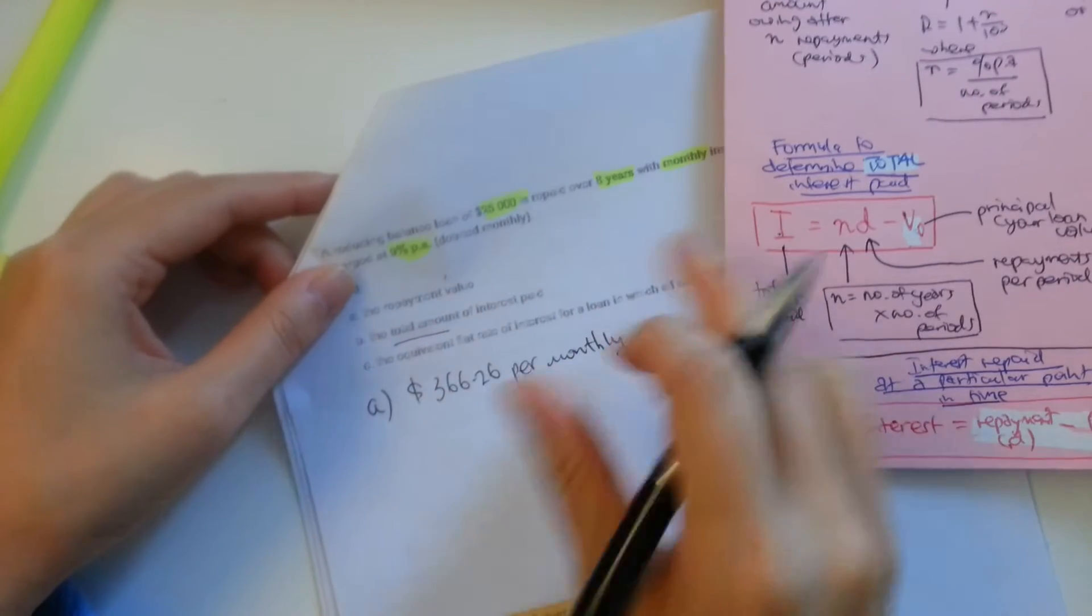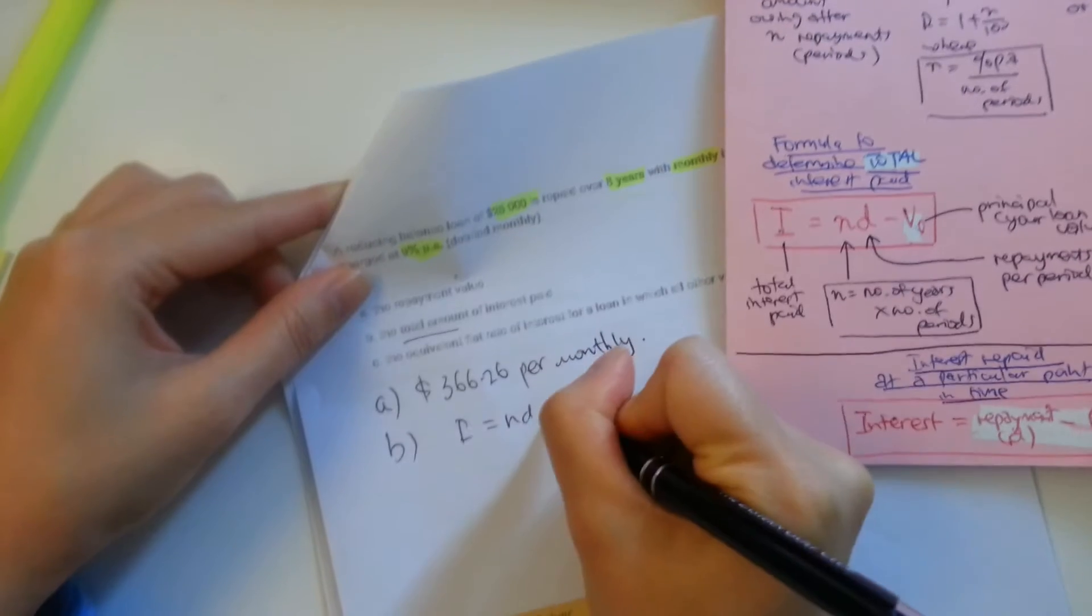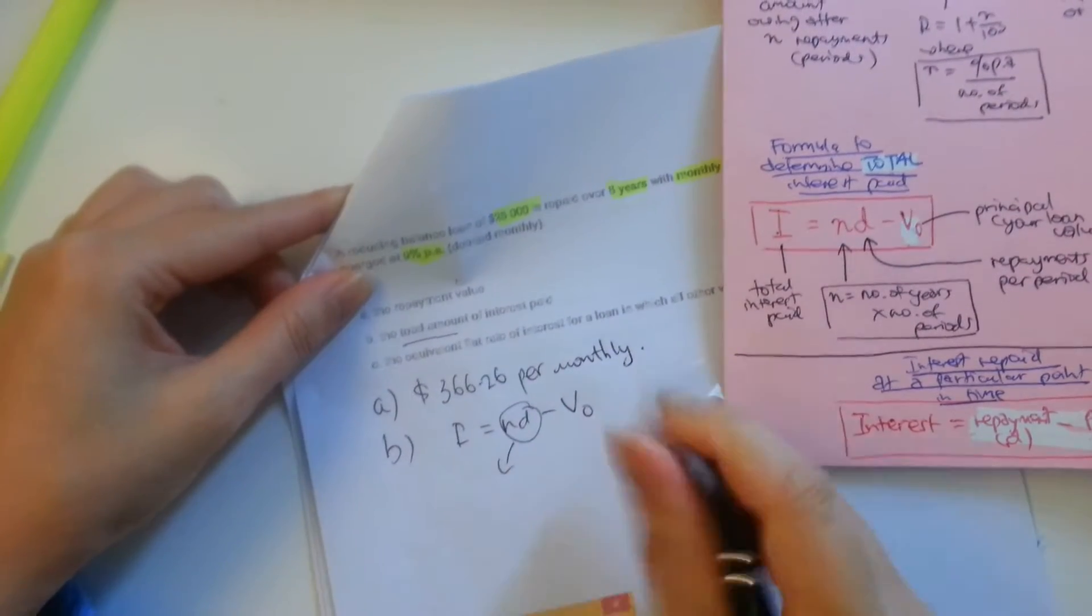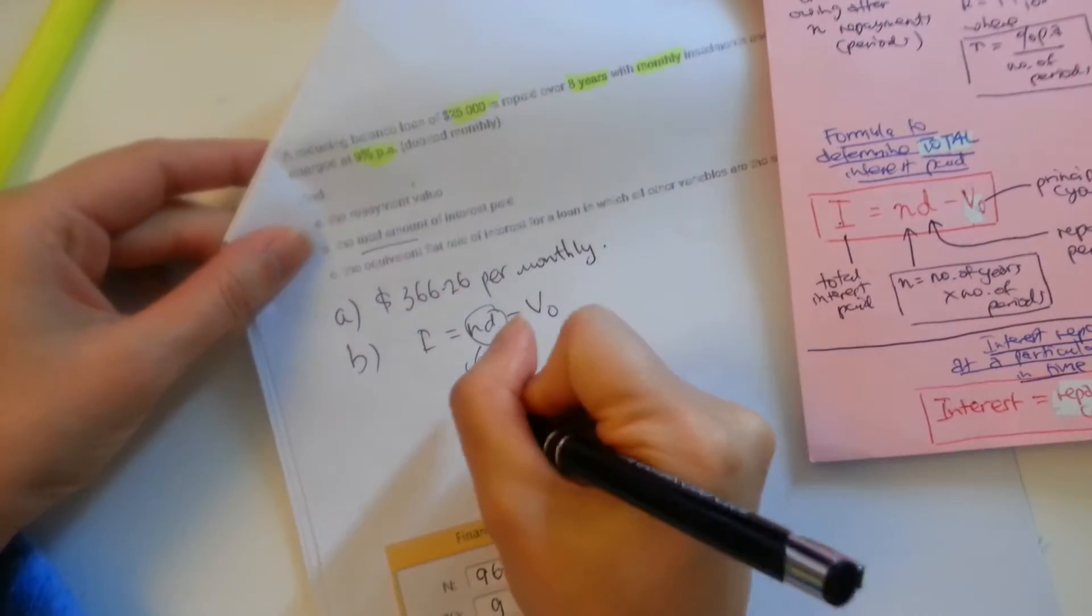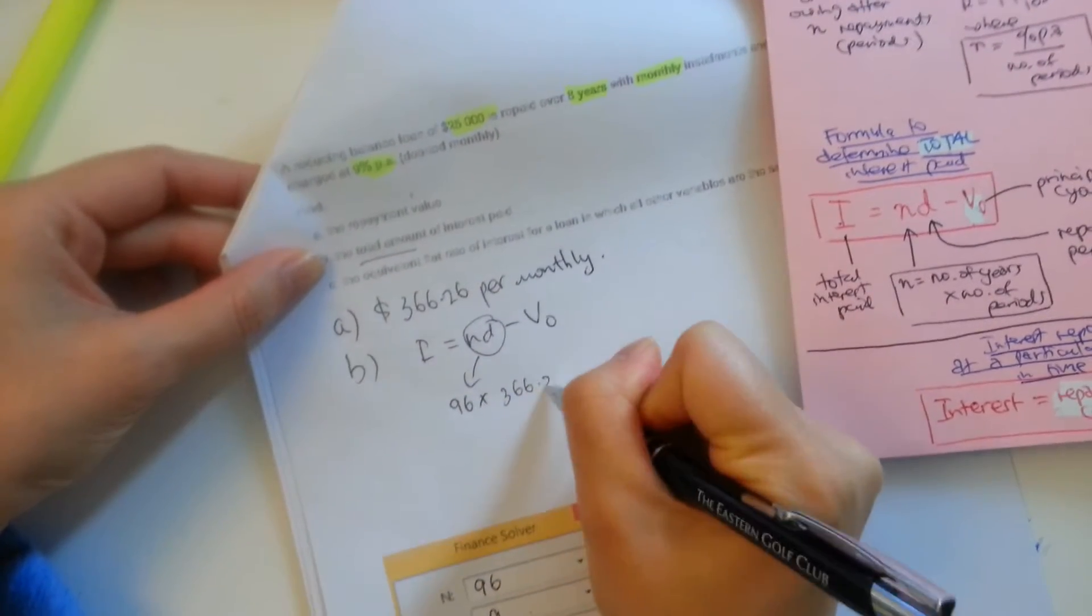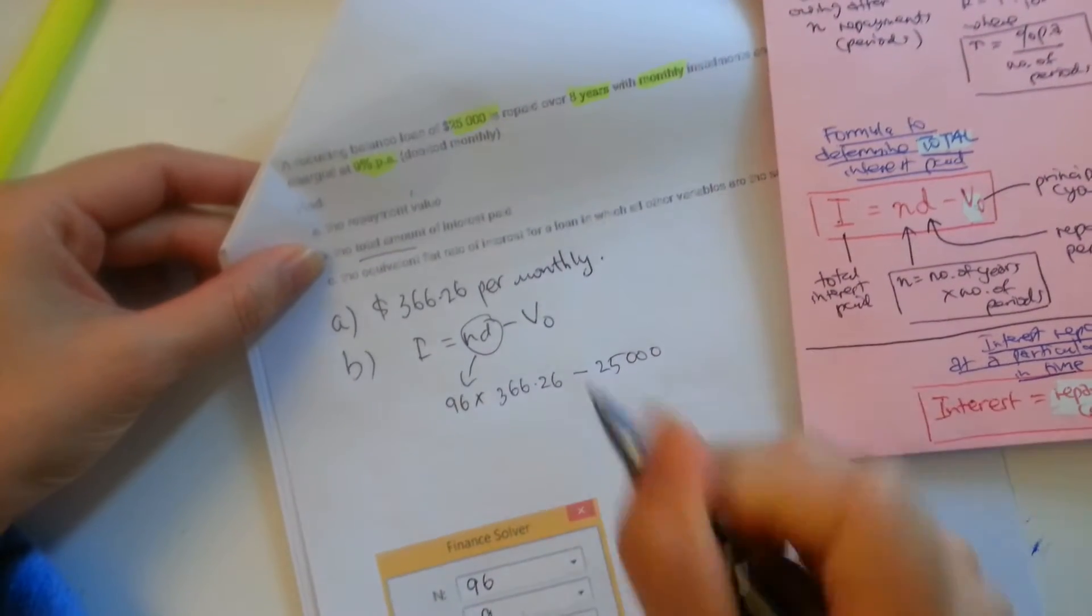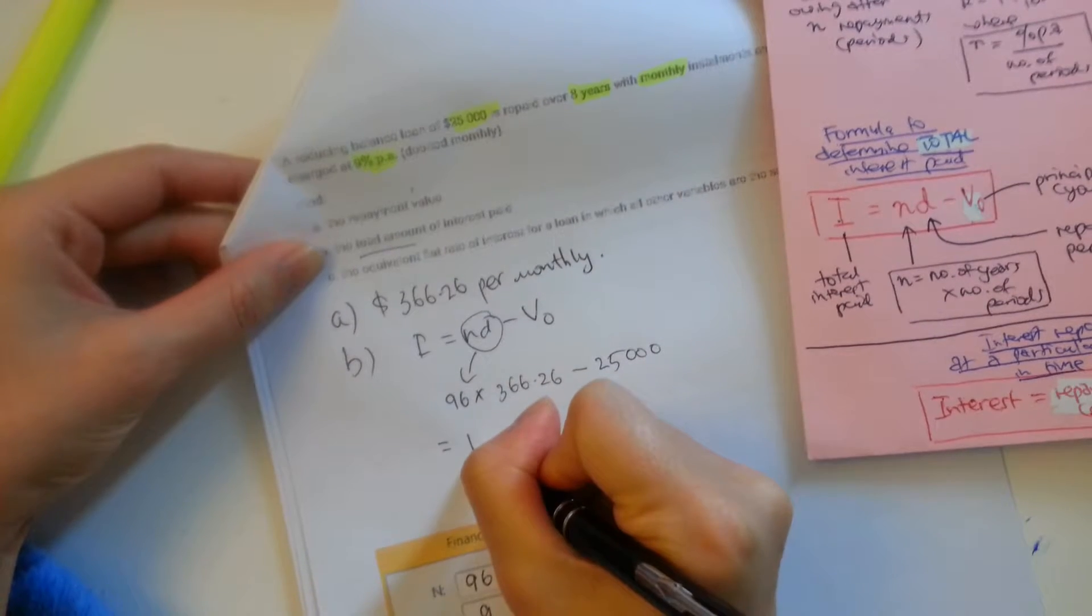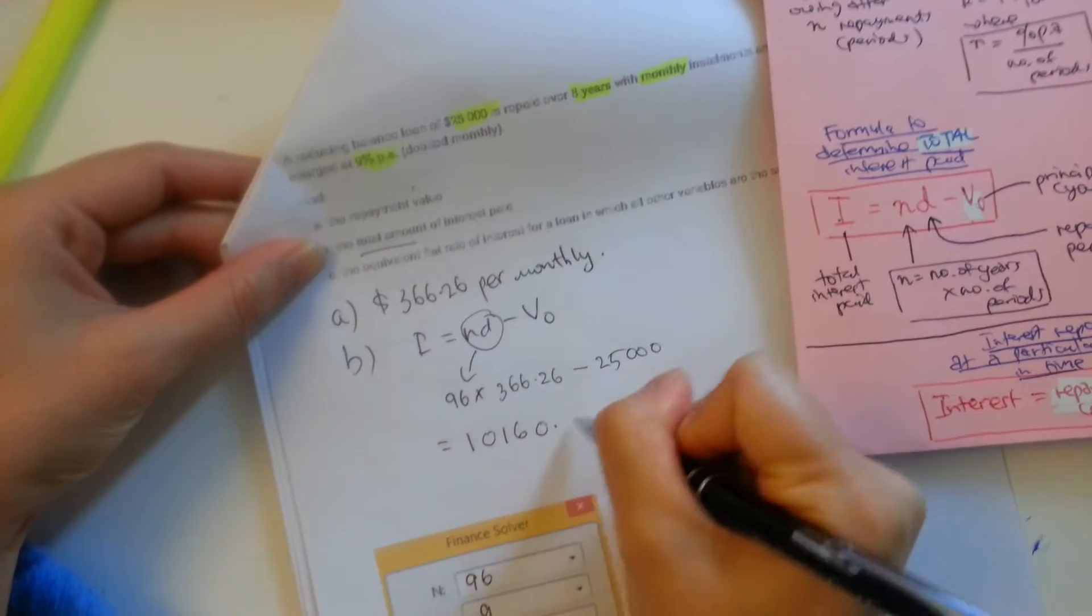It's just going to be monthly for eight years. So B would be, using this formula, N, in this case, is 96 times D, which is our repayment of $366.26 minus the principal. And we should get an answer of 1,016, 0.96.